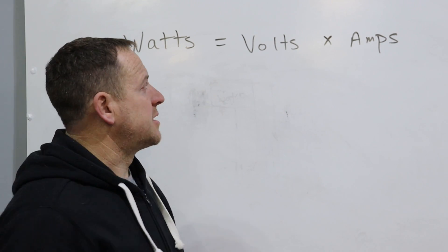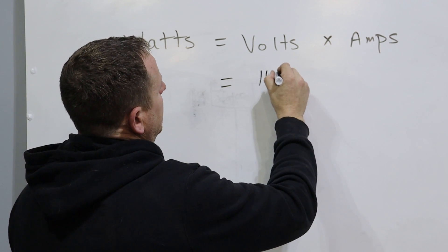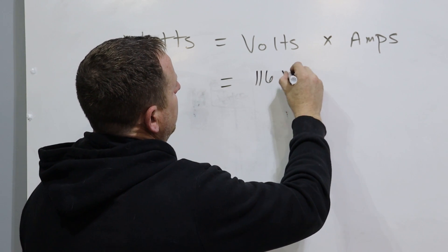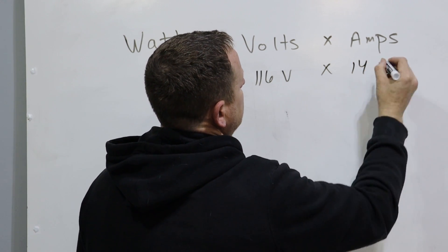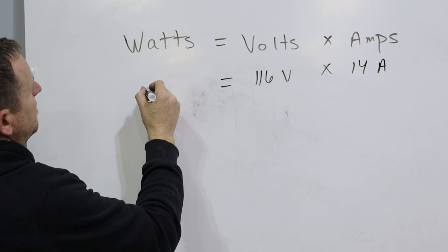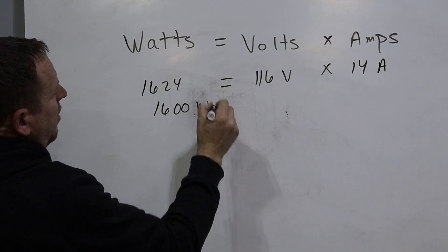So based on my measurements, I got 116 volts times 14 amps, which gives me approximately 1,624 or about 1,600 watts.